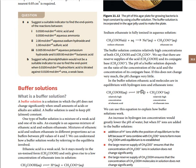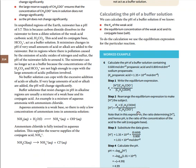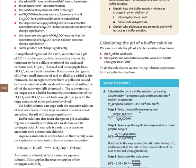If you add a base instead, the OH⁻ reacts with H⁺, and the equilibrium shifts to the right, producing more ethanoate ion. More ethanoate then binds with the sodium ion, shifting left and producing more sodium ethanoate. These are the equations involved in buffer action.